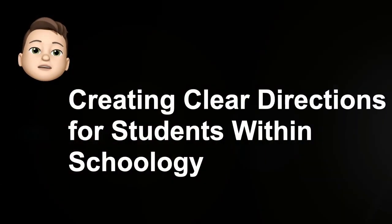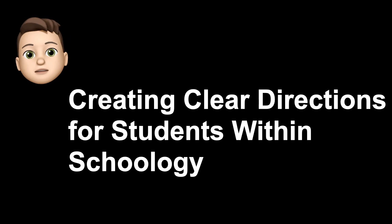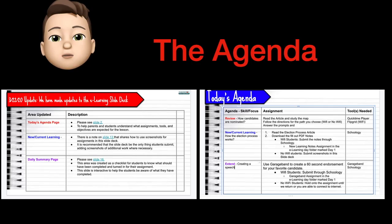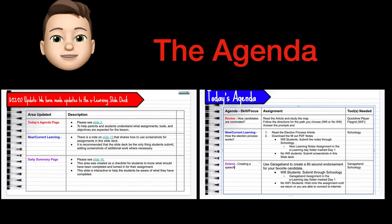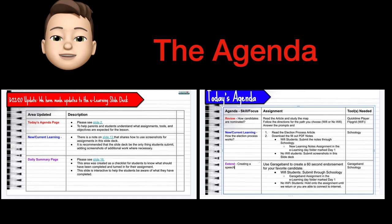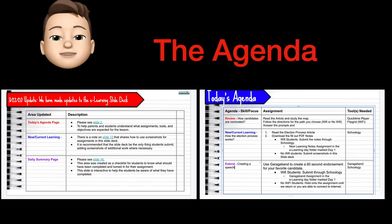Tip number one: creating clear directions for students within Schoology. We have made a few changes to the eLearning template to better ensure that students and parents have a clear understanding of the assignments for the day. The first area we would like to cover is the agenda. The agenda was created to give a clear focus of the assignments for parents and students, and you can clearly outline the tools that are needed to complete the assignments.